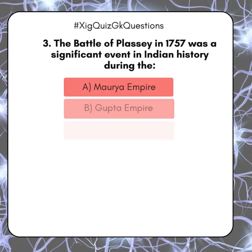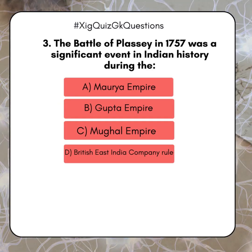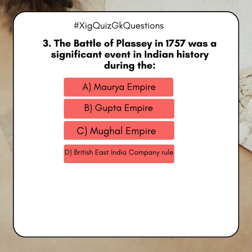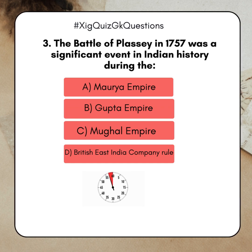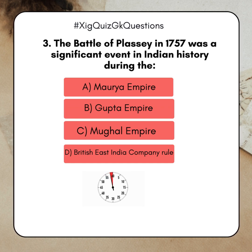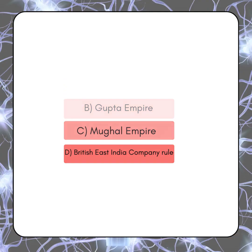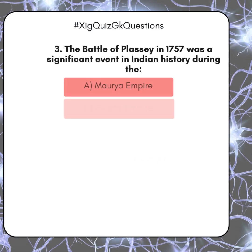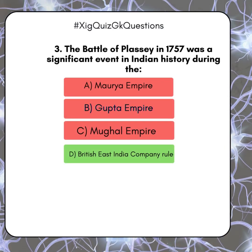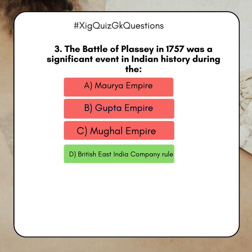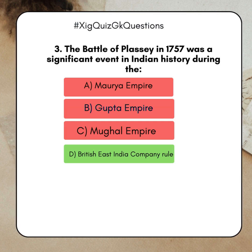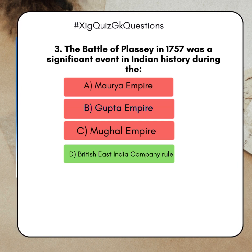The Battle of Plassey in 1757 was a significant event in Indian history during the: A. Maurya Empire. B. Gupta Empire. C. Mughal Empire. D. British East India Company Rule. Answer: D. British East India Company Rule.